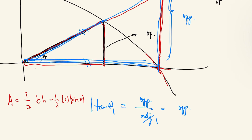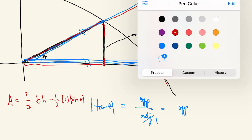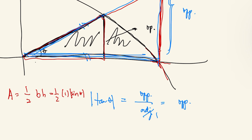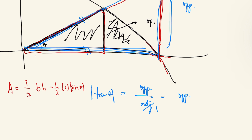We're also interested in the area of the circular sector — the region that includes the arc of the circle. This sector is a portion of the entire 2π circle, so its area works out to |θ|/2.